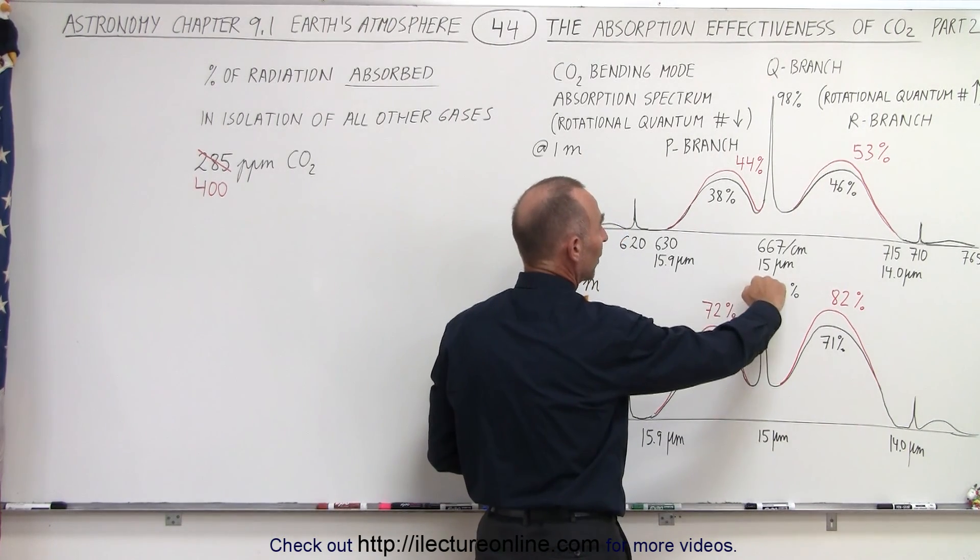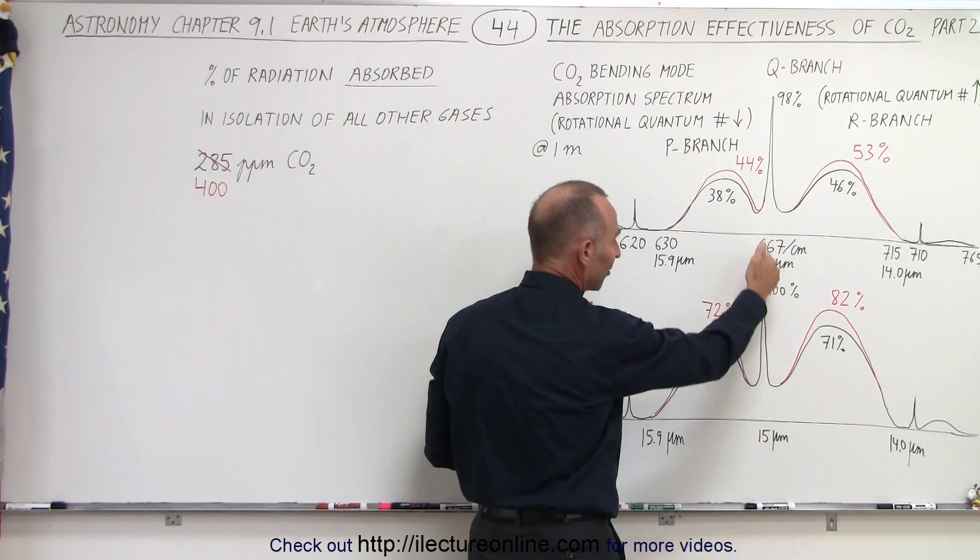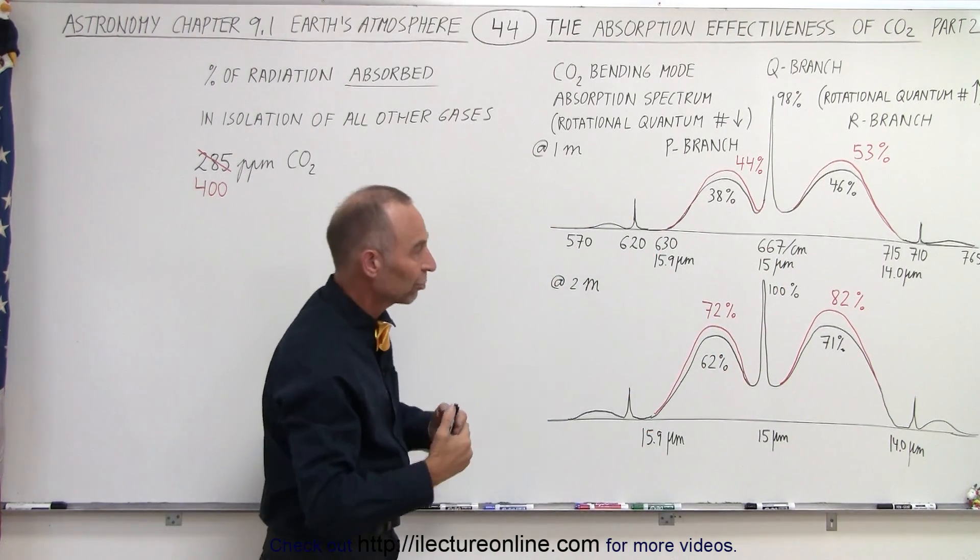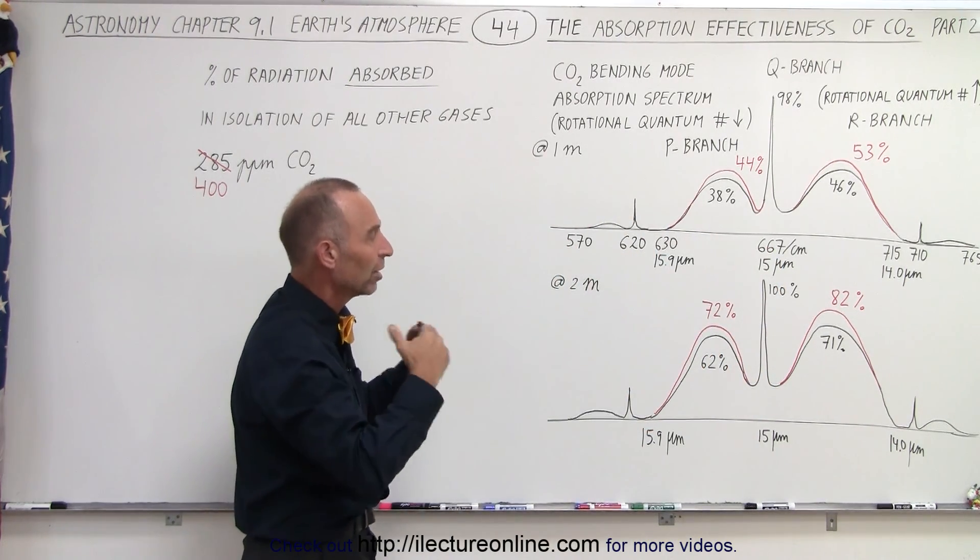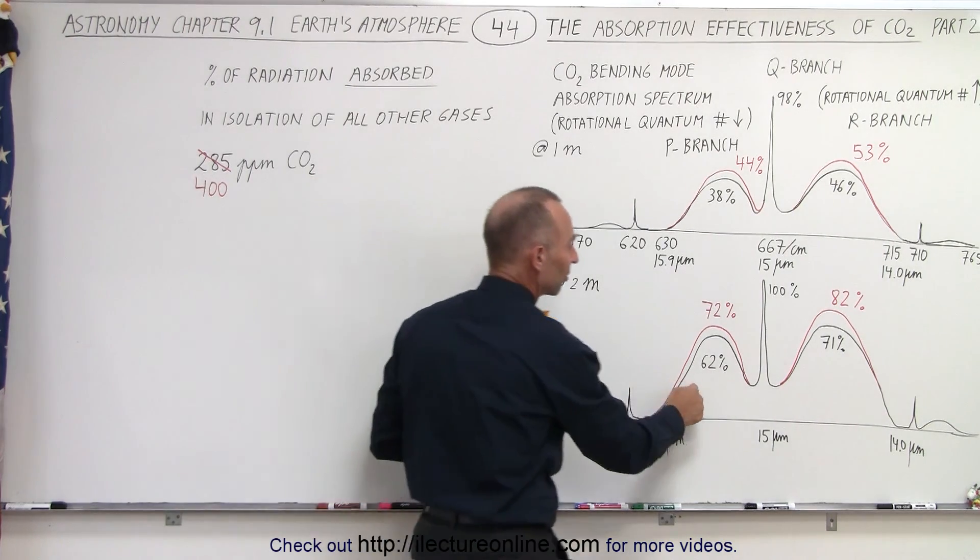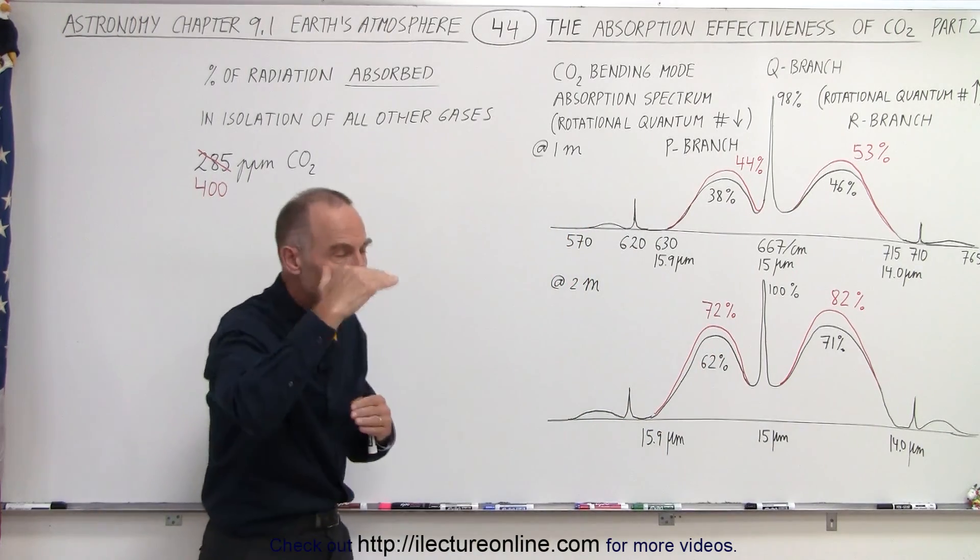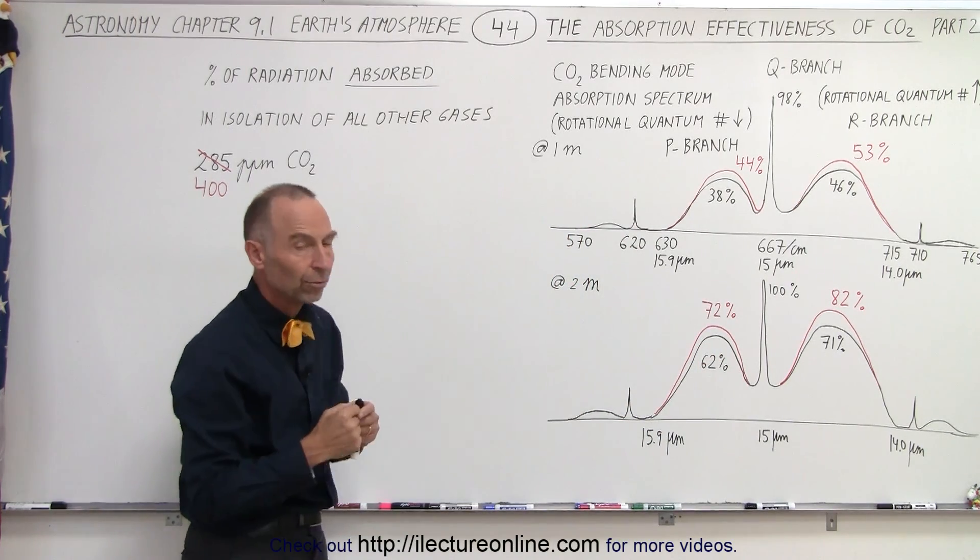Notice that at two meters, it's already 100 percent absorbed at the central peak here that's caused by the quantum jump, the vibrational quantum jump from one vibrational mode to the next vibrational mode. And the side lobes here, the P and the R branch, they are formed by the changes in the rotational quantum numbers.